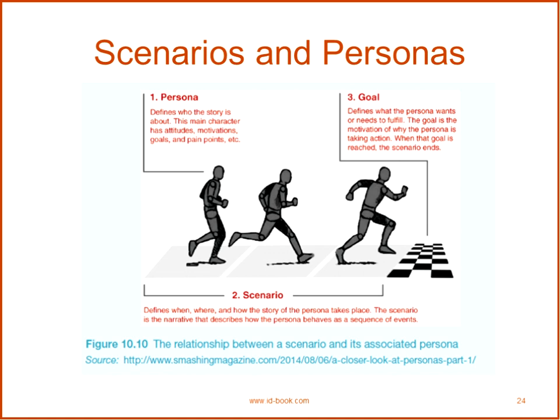How are scenarios, personas, and goals connected? A persona is a user who is the actor of the scenario. A scenario defines when, where, and how the story of the persona takes place — in the form of a story of how the persona behaves to achieve their goal. A goal defines what the persona wants and needs, and is the motivation of the persona — what they want to achieve from the system.